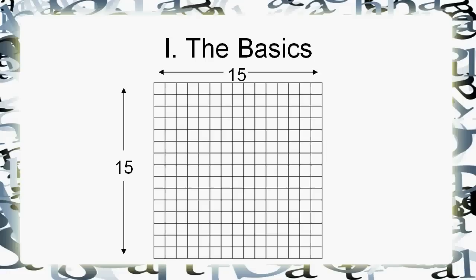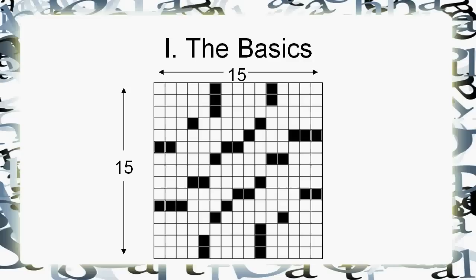Let's talk about the basics first of constructing crosswords before we get into any details. Crosswords have got to be 15 blocks wide by 15 blocks high — there are a couple exceptions, but that's the general rule. And of course, they're not all white squares — you've got to have some black squares in there.